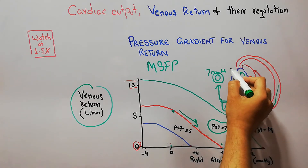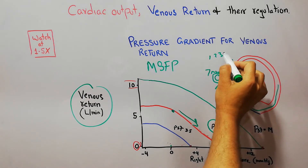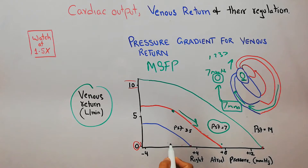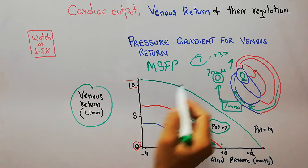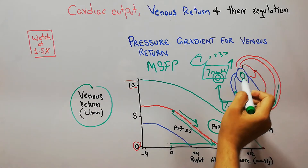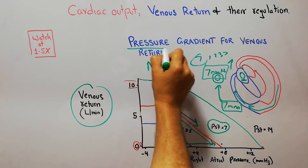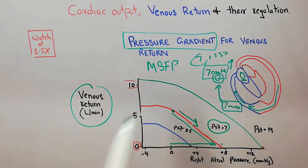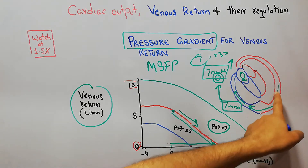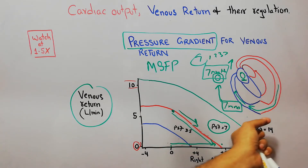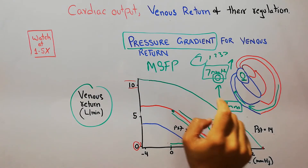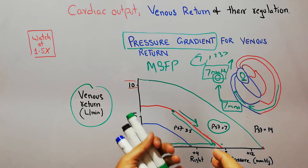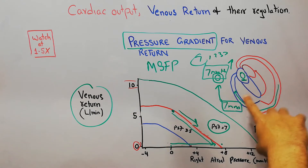If the right atrial pressure starts increasing from 0 toward 7 mmHg, the venous return will decrease and touch the zero level. At a right atrial pressure of 7 mmHg there will be no pressure gradient — no difference between the right atrial pressure and the mean systemic filling pressure. Mean systemic filling pressure reflects the filling of vessels; more volume and tightness means higher pressure.